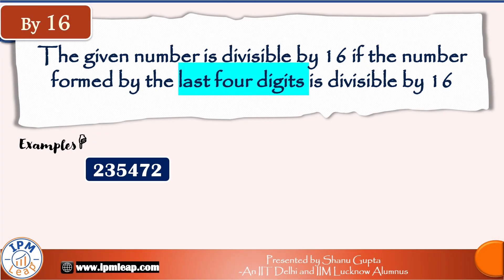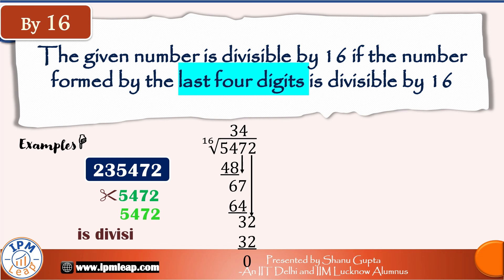Finally, the rule for 16 is similar to the rules for 4 and 8: a number is divisible by 16 if the number formed by its last four digits is divisible by 16. This rule is useful only for numbers greater than four digits. For 235472: the last four digits are 5472, and dividing 5472 by 16 gives remainder 0, so 235472 is divisible by 16.